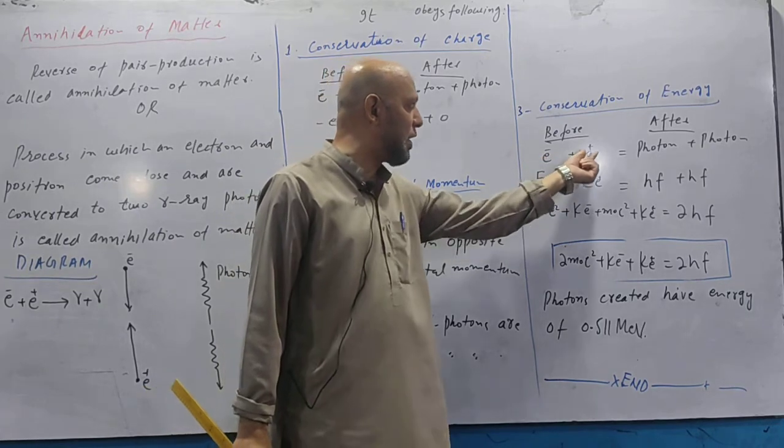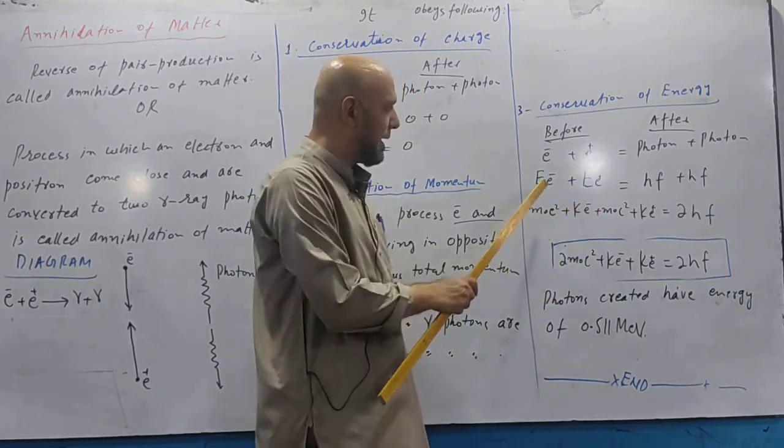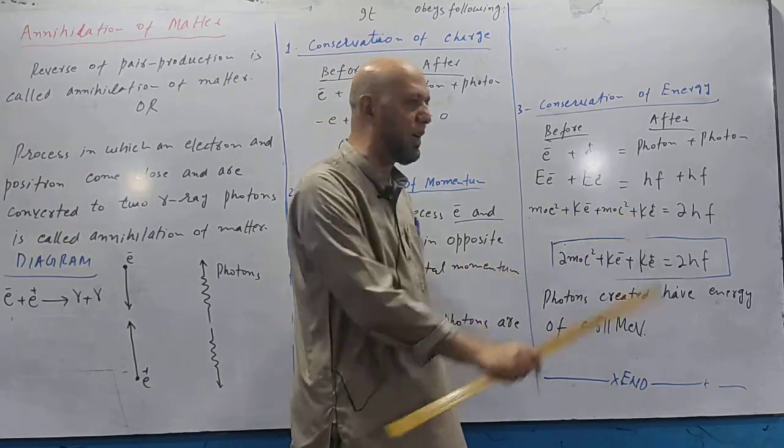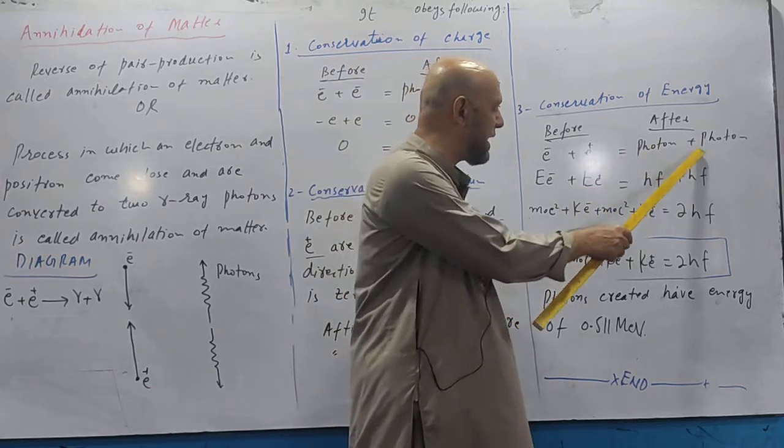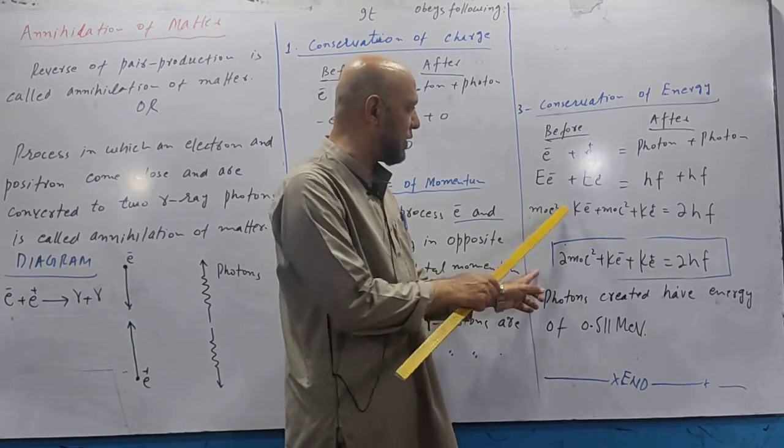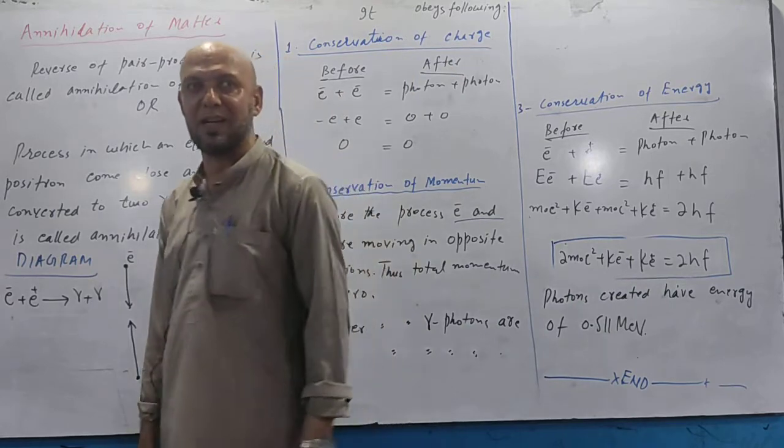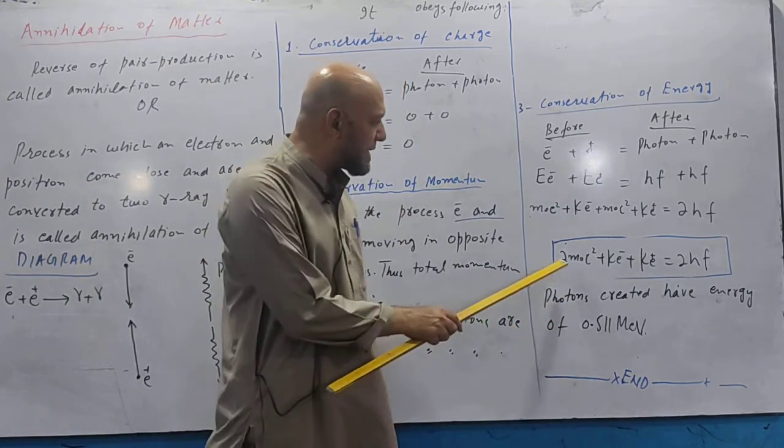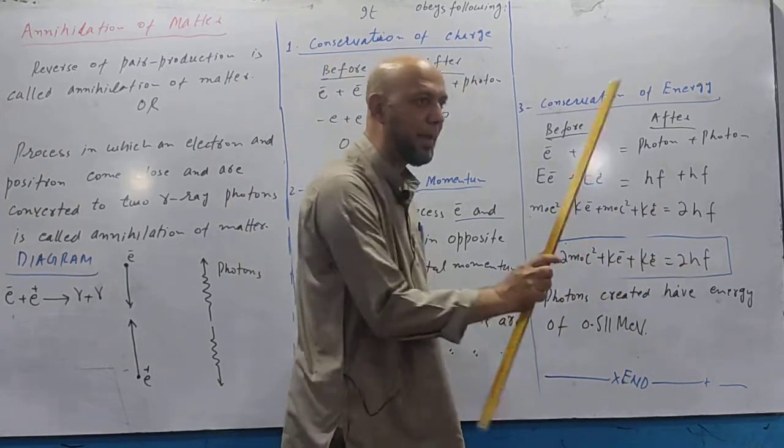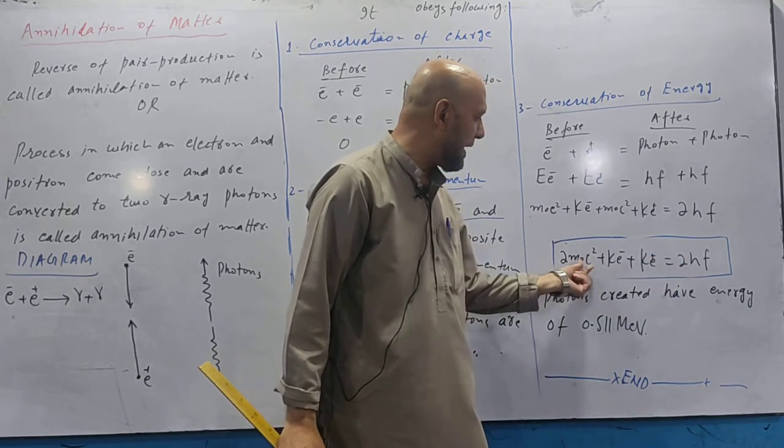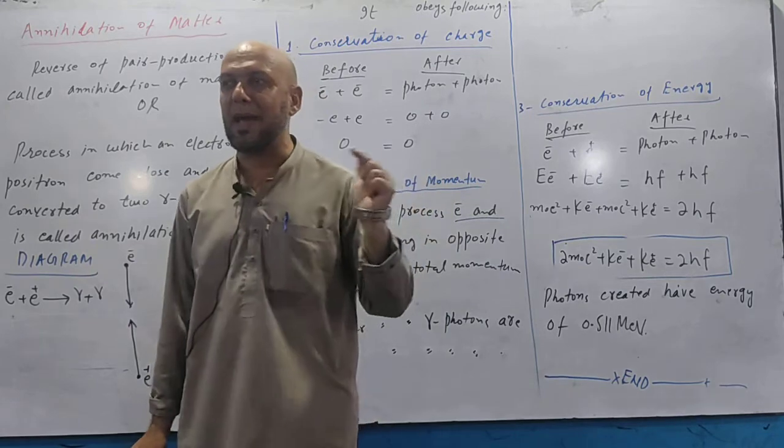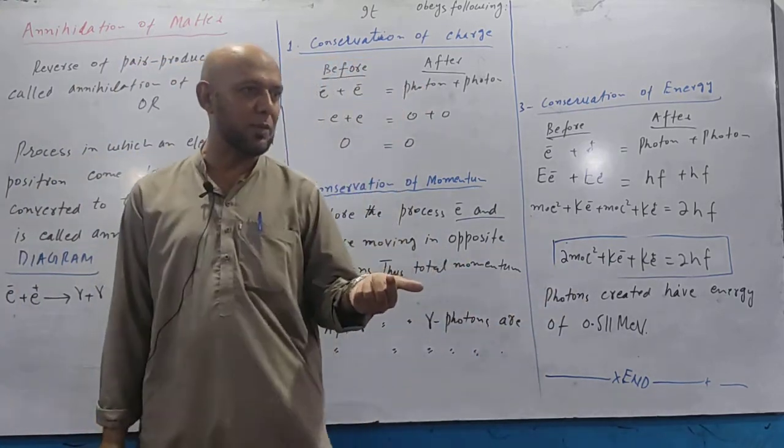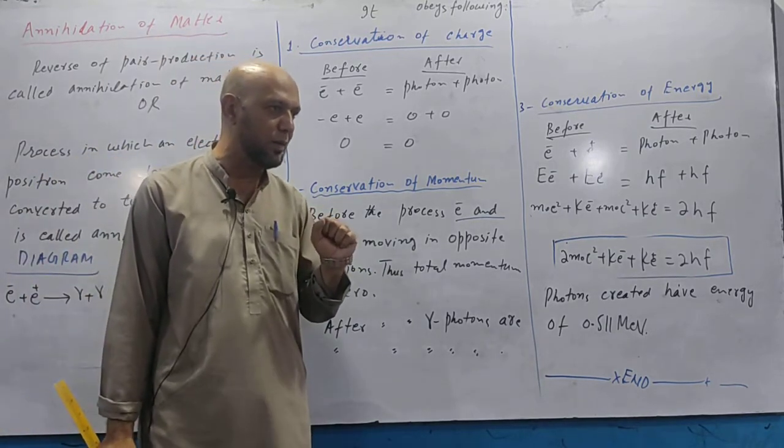Energy is also same. Kinetic energy of electron plus energy of positron - what was on right side earlier came to left. Rest mass energy of electron plus kinetic energy of electron - this is electron's total energy. Plus rest mass energy of positron plus kinetic energy of positron. Each photon has hf energy. The other also hf. This becomes 2hf. So final equation: 2 m nought c square plus kinetic energy of electron plus kinetic energy of positron equals 2hf. These photons created - their energy is this sum. Basically this mass converted into photons. If these 2 exactly add up, then 0.511 MeV photon is created. One photon - its energy is half of this. Divide by 2 - what did I write? m nought c square. So 0.511 mega electron volt.